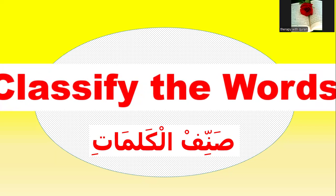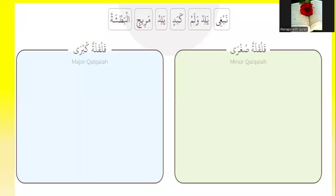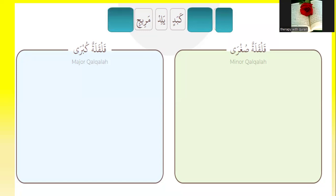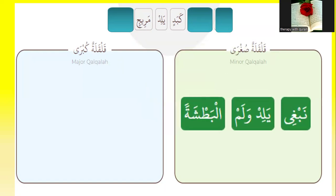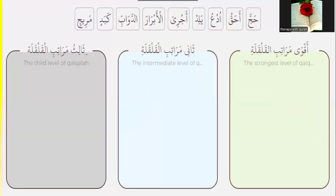Now let's go to the fifth group: classify the words. Number one — look at the word, which is minor and which is major qalqala? The qalqala letter in the middle — it's minor qalqala. At the end with a makhraj — it's major qalqala. Yes. The letter has sukoon with shadda, so it's the strongest level of qalqala. Yes.